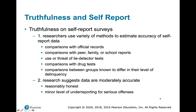There are problems with self-report data. How truthful are people? We can try to estimate accuracy by comparing self-report data with official records, or in the case of drug use, by drug testing respondents. Research tells us the data is moderately accurate — people are reasonably honest — with a minor level of underreporting for serious offenses.